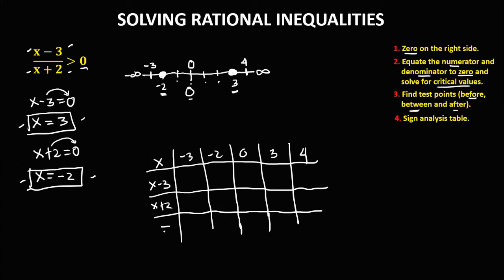We solve first for the critical values. If x equals negative 2, the denominator becomes 0, which makes the equation undefined or error. For the second critical value, if x equals positive 3, the numerator becomes 0, so the result is 0.